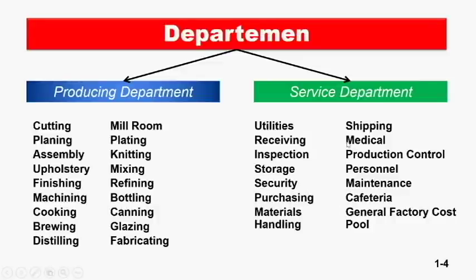Sedangkan di sisi sebelah kanan, inilah contoh-contoh dari departemen pendukung atau service department. Service department adalah departemen yang tidak melakukan proses produksi, tetapi keberadaannya diperlukan untuk mendukung berlangsungnya proses produksi dengan baik. Contohnya: utilities (listrik, air, telepon), receiving (penerimaan), inspection (pengecekan), storage (gudang), security (keamanan), material handling, shipping (pengiriman), medical (medis), production control, personal (SDM), maintenance (pemeliharaan), cafeteria, dan general factory cost pool.